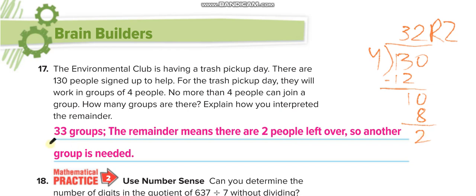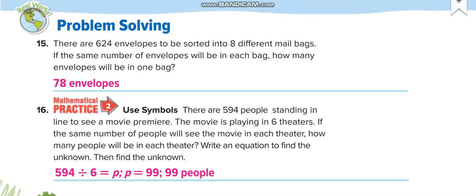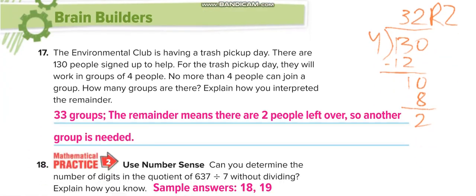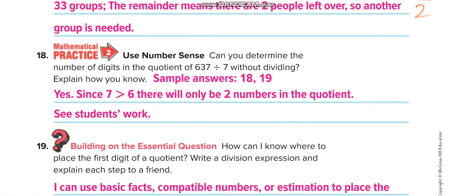You will create 32 groups, and for the 2 people left over, you create another group. That's why 33 groups. Actually, you have 32 groups of 4 people each and the last group of 2 people, so that's why 33 groups.